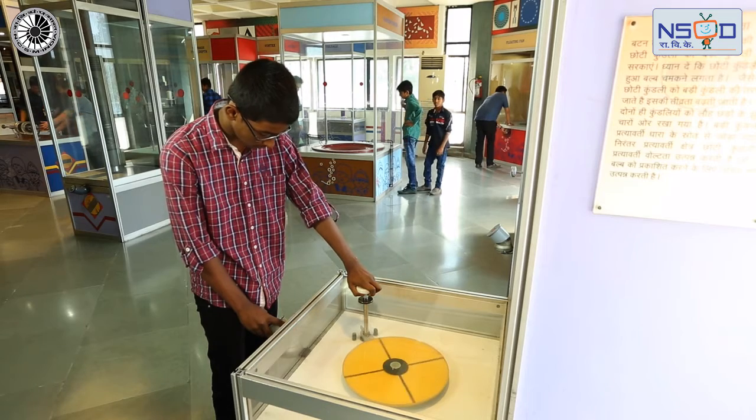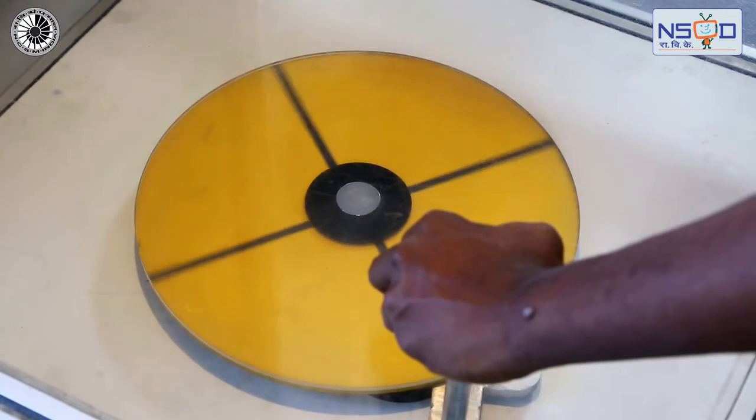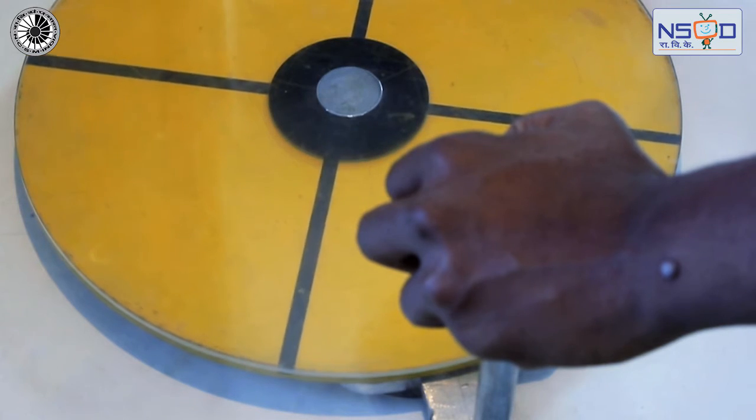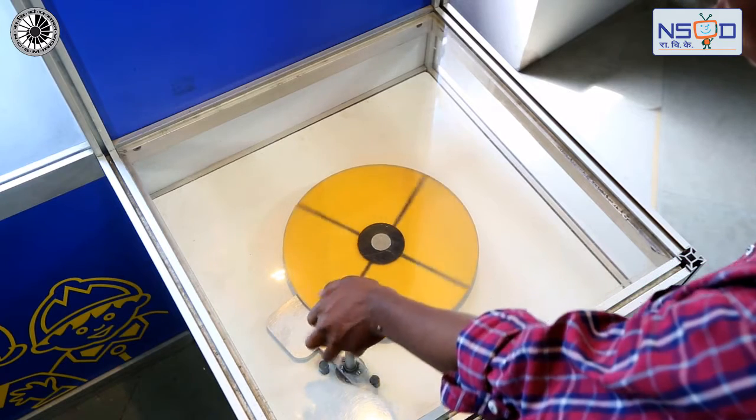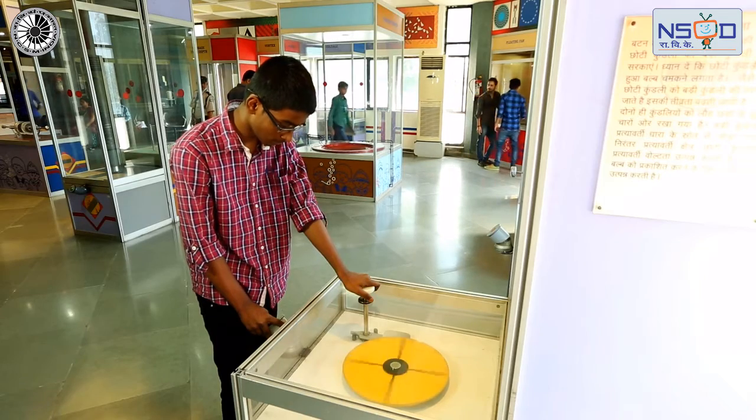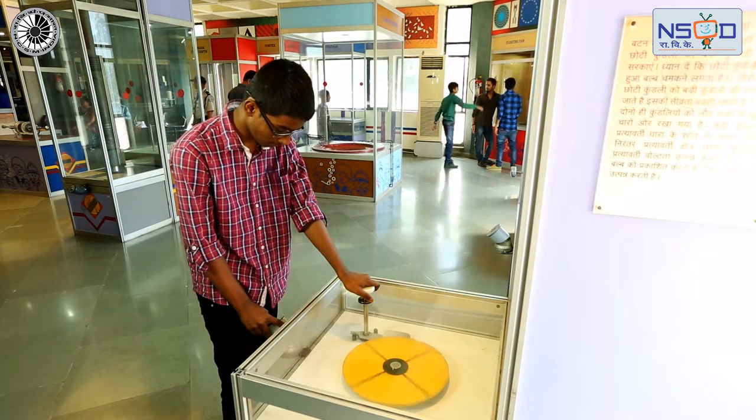Now bring the sheet at the center and at the other extreme respectively. At the center, the disc stopped rotating, and at the other extreme it rotates in the opposite direction. This happens due to electromagnetism and eddy current.